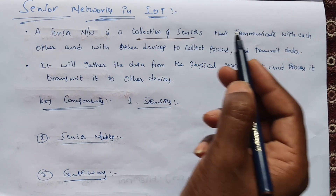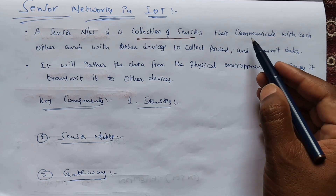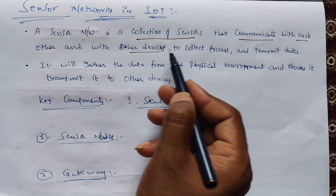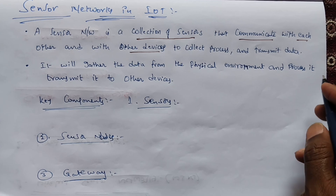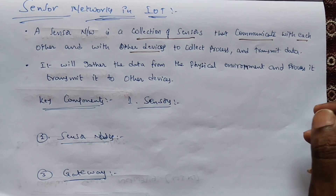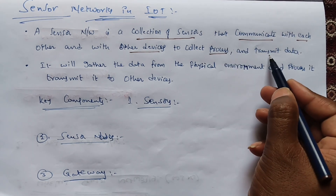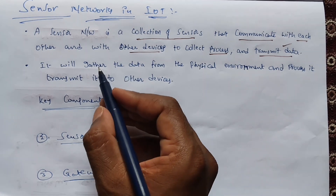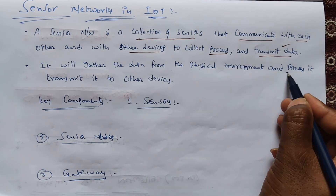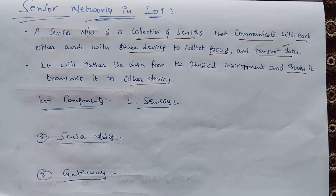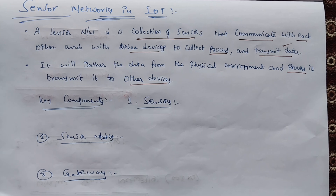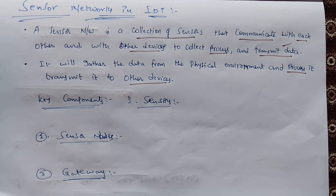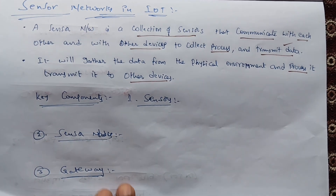A sensor network is a collection of sensors that communicate with each other from one device to another. It will collect, process, and transmit the data. Sensors gather data from the physical environment and transmit it across devices. For example, a light sensor gathers light intensity from its environment and collects data from different environments.